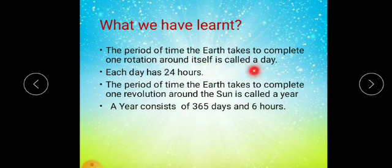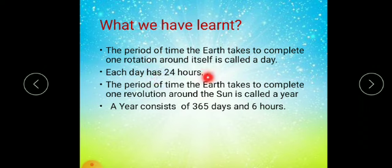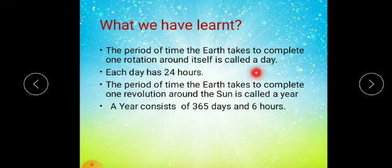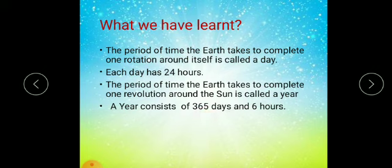To summarize: the period of time the earth takes to complete one rotation around itself is said to be a day, and each day has 24 hours. The period of time the earth takes to complete one revolution around the sun is said to be a year, which consists of 365 days and six hours.